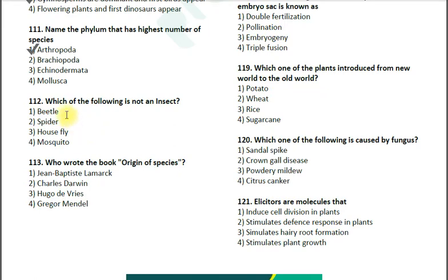Question number 112: Which of the following is not an insect? Options: 1. beetle; 2. spider; 3. housefly; 4. mosquito. This is a simple but tricky question. The correct answer is option 2 — spider. Insects have three parts in their body: head, thorax, and abdomen, and they have three pairs of legs. But spiders have only a cephalothorax — two body portions — and four pairs of legs.